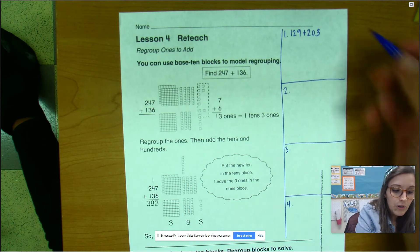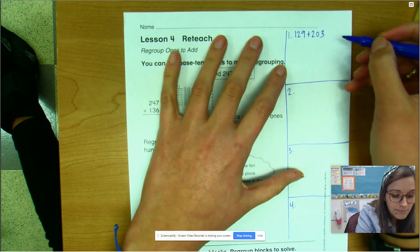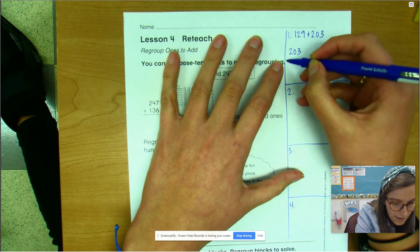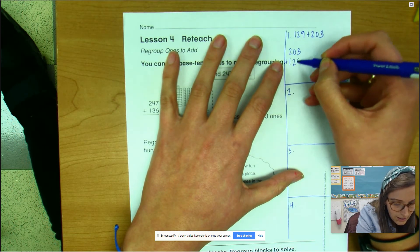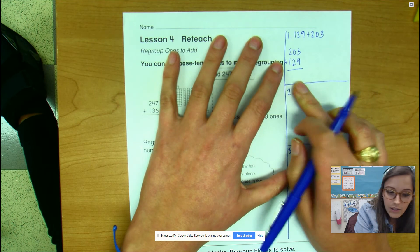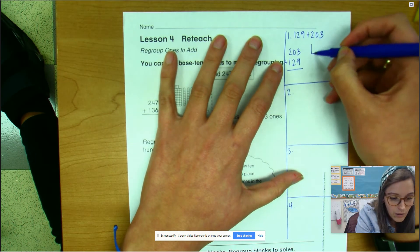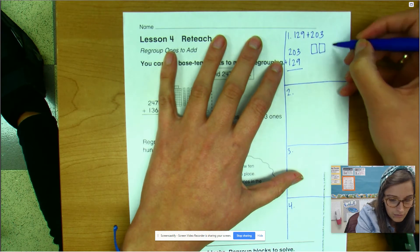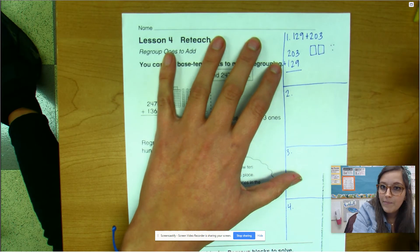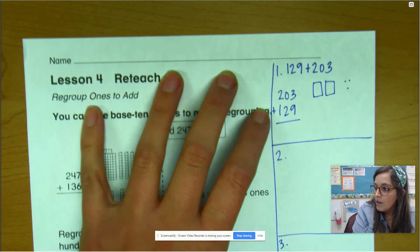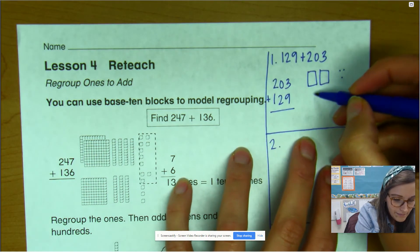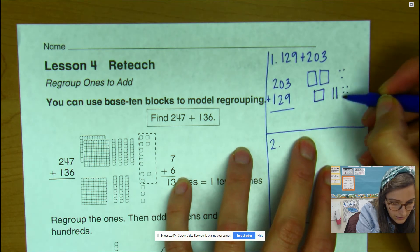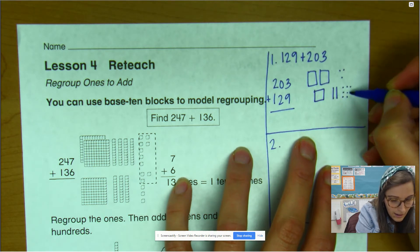All right. So our first one is 129 plus 203. We're going to write that right here. You're going to have to write kind of little because these boxes are kind of small. So I know that would look like this. Let's write 203 plus 129. Make sure you have room underneath to write your answer. And let's build it. So we have 200s. I don't have any 10s in 203. And then I have three ones. I'm going to zoom in so you can see a little bit better. And three ones. Here I have 100. I have two 10s. And I have nine ones.